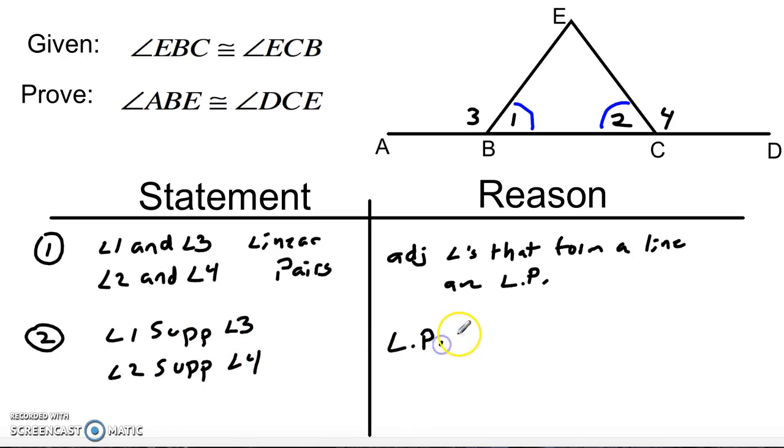The reason is very simple, it's just that linear pairs are supplementary. This is another theorem that we've talked about, and actually I don't think we've proved yet, but it's very simple to prove.